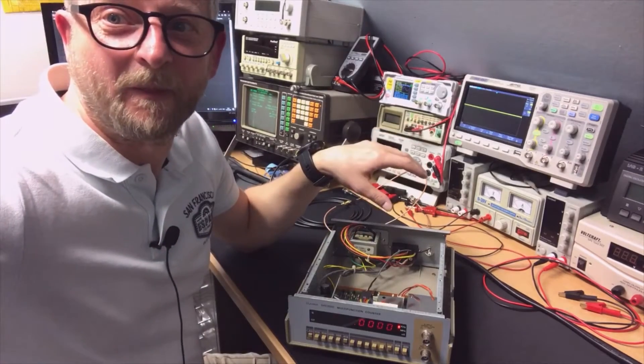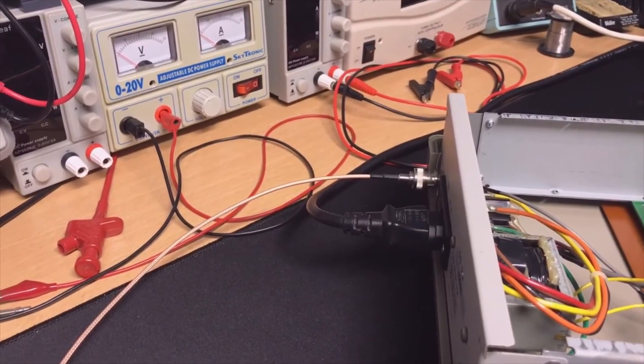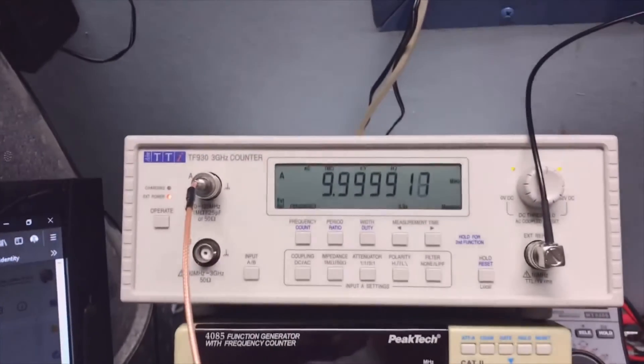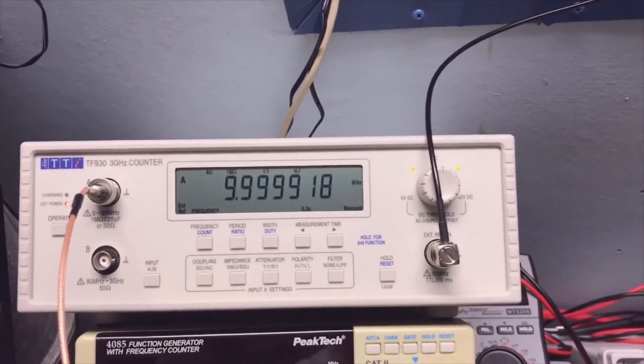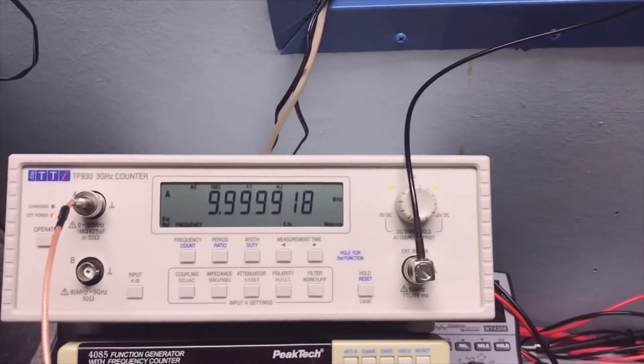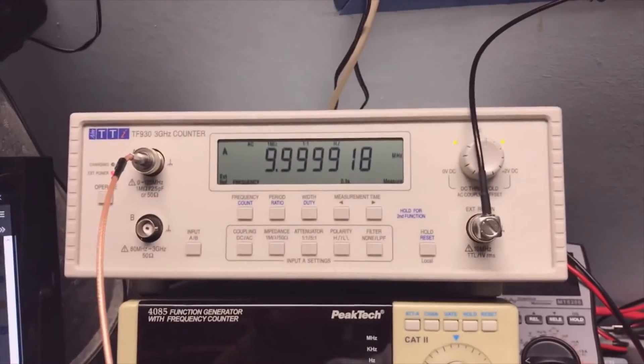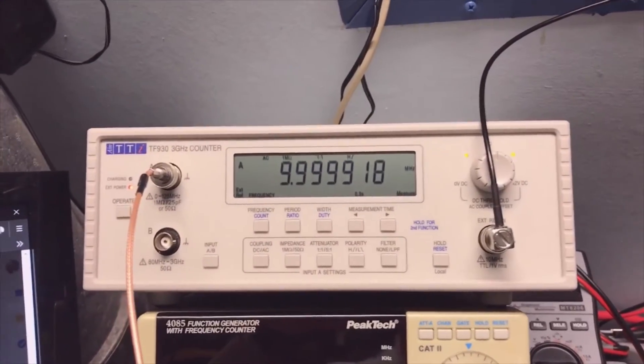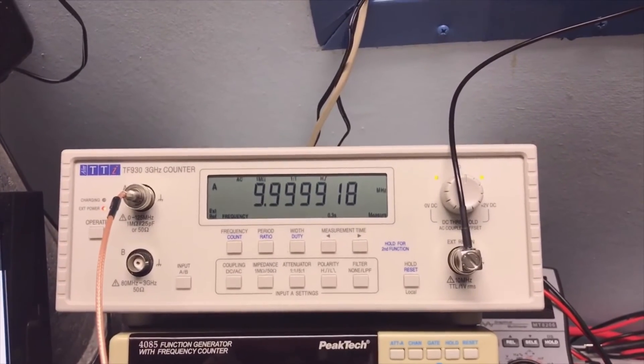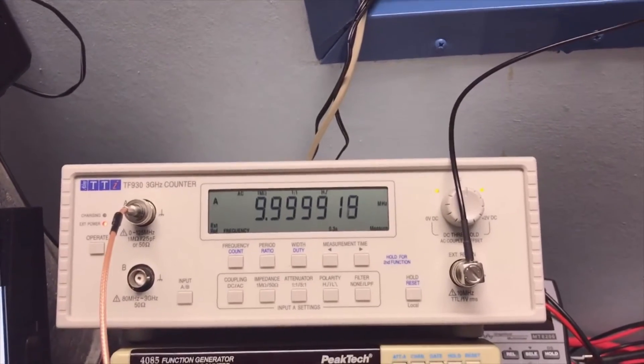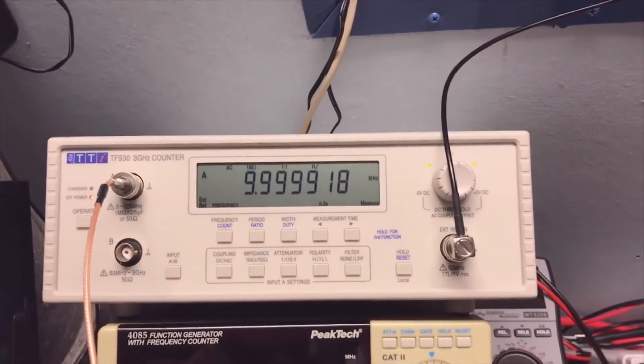I connected the output of the frequency counter to the input of my other frequency counter, the TTI. The TTI is more professional, so it does have an external reference input and I connected it to the GPSDO. So it's comparing, and you see also it is about 80 hertz, 82 actually, 80 hertz of difference. So that's the second method.